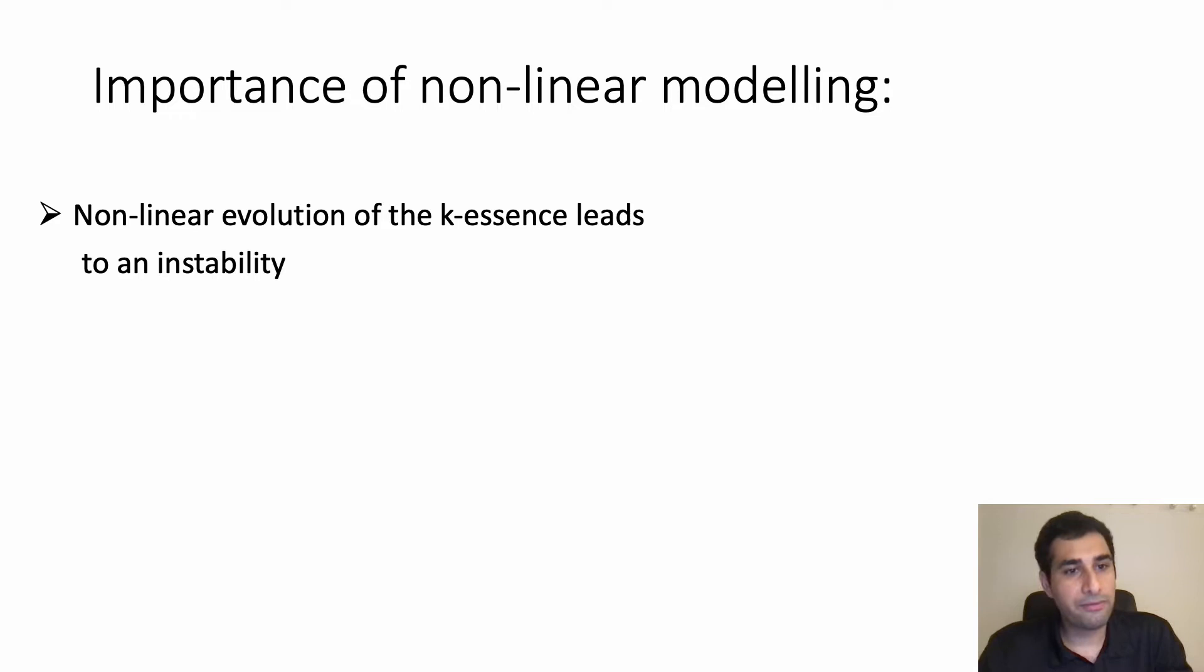And by k-essence theory what I mean fundamentally is a Lagrangian, a general Lagrangian which is a function of kinetic term and scalar field. It can be any function you can think of. There are some standard ones, for example quintessence also is part of this Lagrangian.